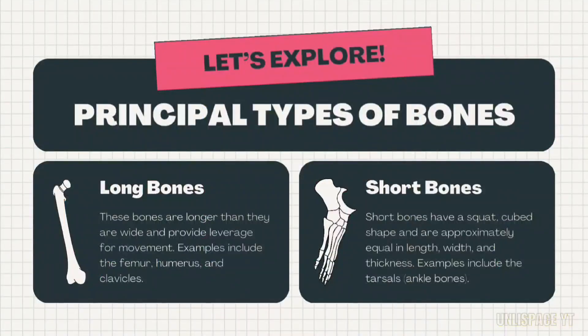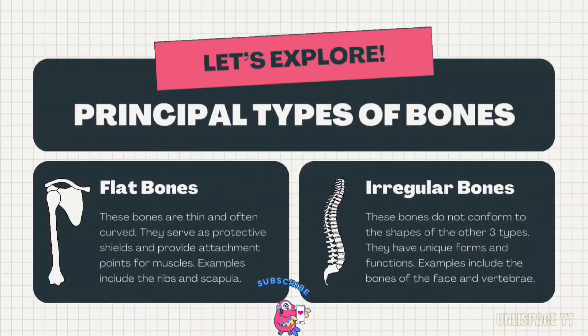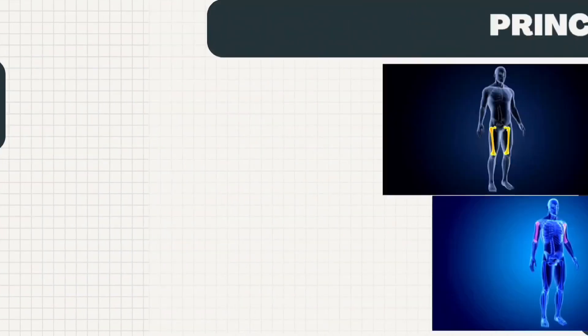Principal types of bones. First, long bones. Second, short bones. Third, flat bones. And fourth, irregular bones.